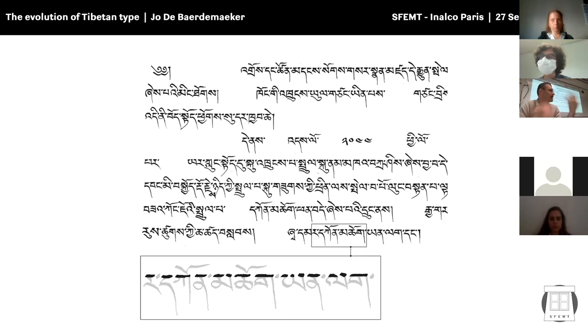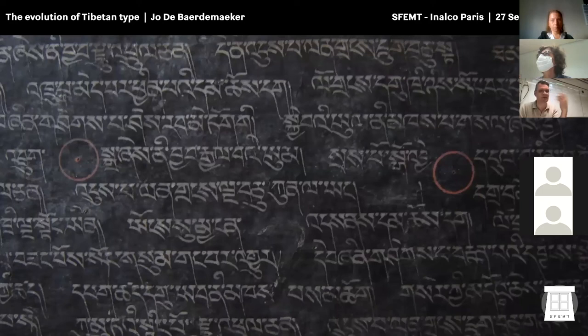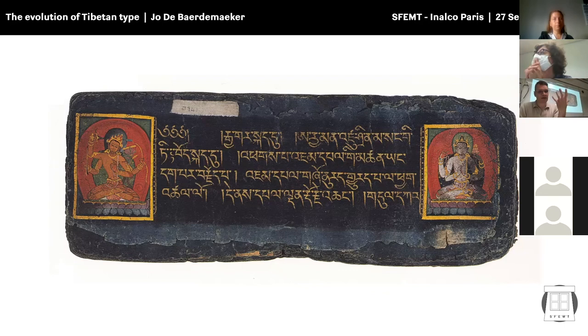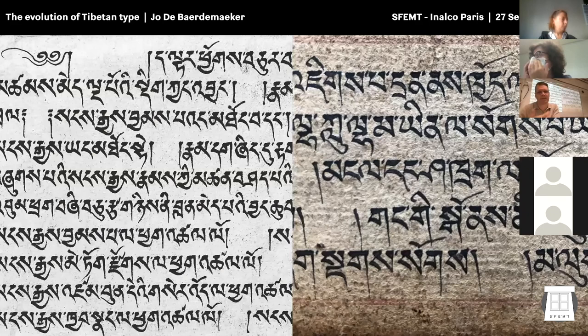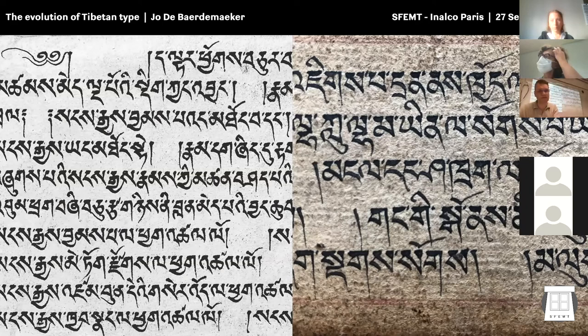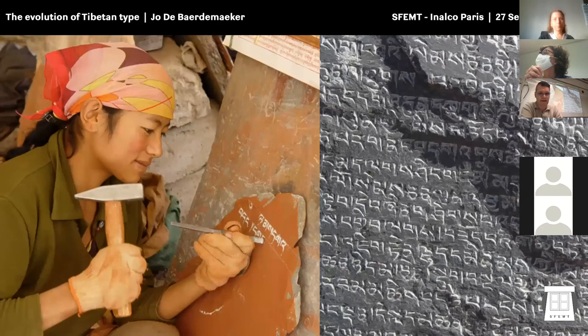Uchen is mainly used for manuscripts — you can see manuscripts written with silver ink or gold ink, decorated to produce different kinds of literature and scriptures. Here you can see more calligraphic styles used by not only official scribes but also calligraphers and ordinary people writing formal and official letters. It takes more time to write, more time to stylize and organize lines on the page. But at the same time, the Uchen script is also used for carving into stone.